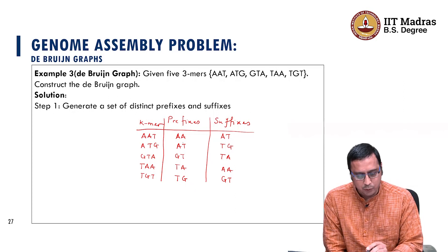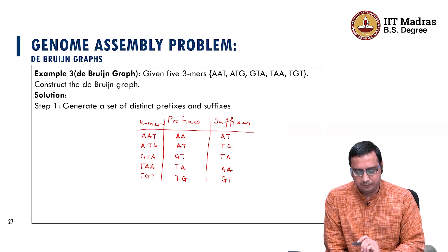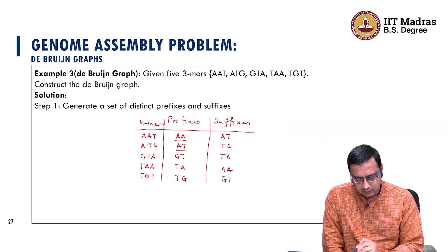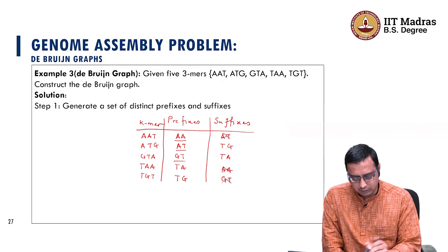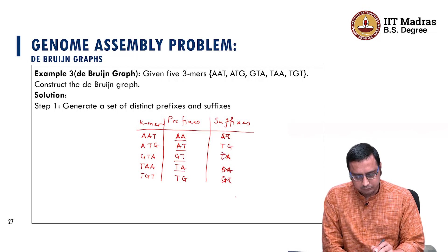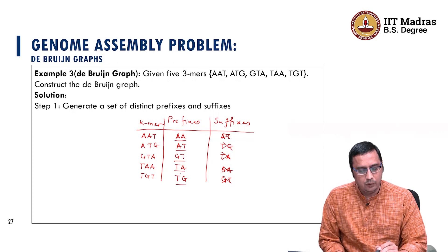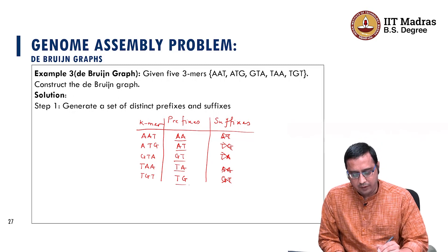Now we are going to look at all the prefixes and suffixes and find a set of distinct prefixes and suffixes. We identify AA, AT, GT, TA, and TG, canceling duplicates to count only distinct values. Hence, we have five distinct prefixes and suffixes together.